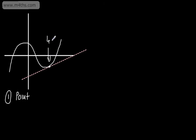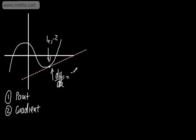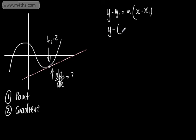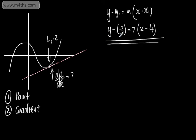For example, this point right here might be (4, -2), and we need a gradient, which we can get from dy by dx by differentiating the function. So, for example, if at this point dy by dx was equal to 7, we can simply substitute this into the equation of a straight line: y minus y₁ equals m times x minus x₁. So we'd have y subtract negative 2 equals 7 lots of x minus 4. You can write that in any form you like, whether y = mx + c or ax + by + c = 0.